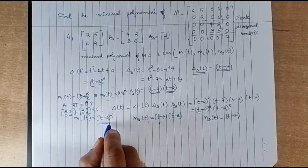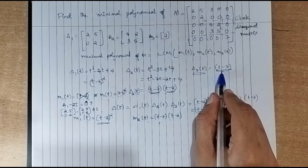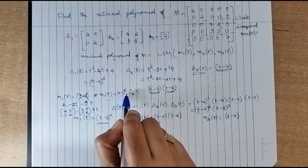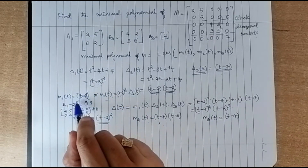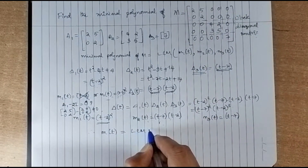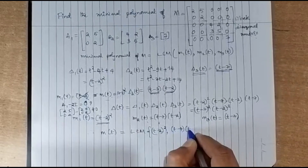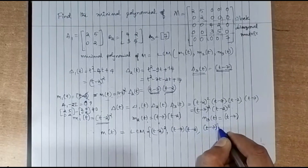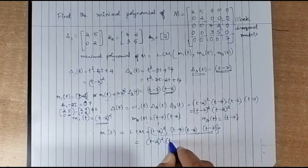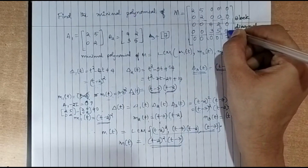In the cases of A2 and A3 there was no problem because they contain only linear factors, but for A1 there is a quadratic factor so we had to check possibilities. Now the minimal polynomial of M is the LCM of m1, m2, m3: LCM of (t minus 2) squared, (t minus 7)(t minus 2), and (t minus 7). This gives (t minus 2) squared times (t minus 7). This is the minimal polynomial of the given block diagonal matrix M.